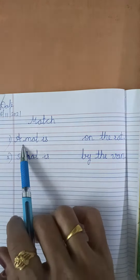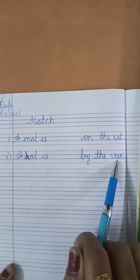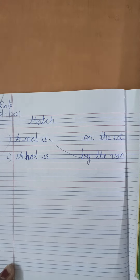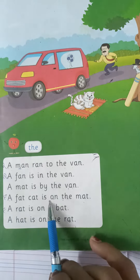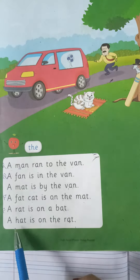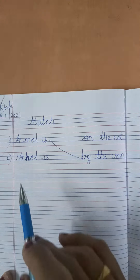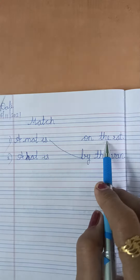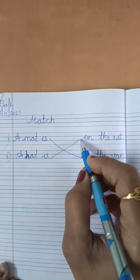See here — a mat is by the van. Yes, you got it. Then match this. For the next sentence, see here: a fat cat is on the mat, a rat is on a bat, a hat is on the rat. The second line is a hat is on the rat. Yes, so match this sentence.